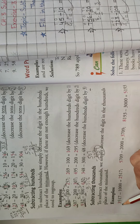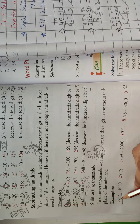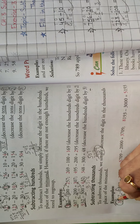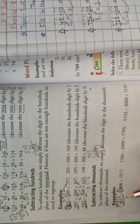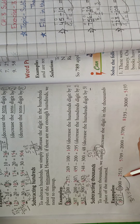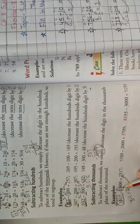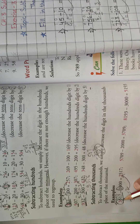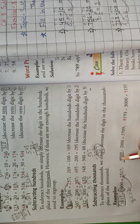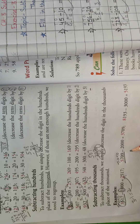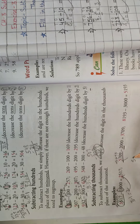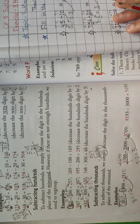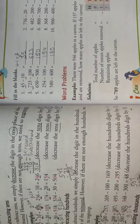Now, subtracting thousands. To subtract 1000, we simply decrease the digit in the thousands place of the minuend. For example, 3 minus 1 equals 2 in the thousands place — no need to calculate all the other digits. Similarly, 5 minus 2 equals 3 in the thousands place. Students, just pay attention and do all the work carefully.